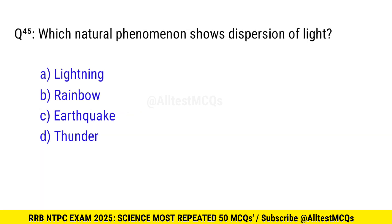Question 45. Which natural phenomenon shows dispersion of light? Right option is B, rainbow.